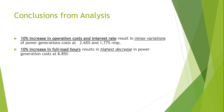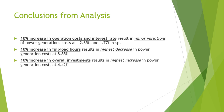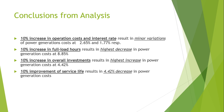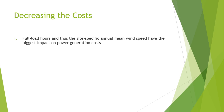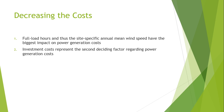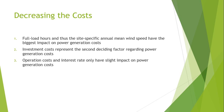A 10% increase in full load hours results in the highest decrease in power generation cost at 8.855%, while a 10% increase in overall investments results in the highest increase in power generation cost at 4.42%. Similarly, a 10% improvement of service life results in a 4.42% increase in power generation cost. Therefore, full load hours and the site-specific annual mean wind speed have the biggest impact on power generation cost. Investment cost represents the second deciding factor, while operational cost and interest rate only have a slight impact.